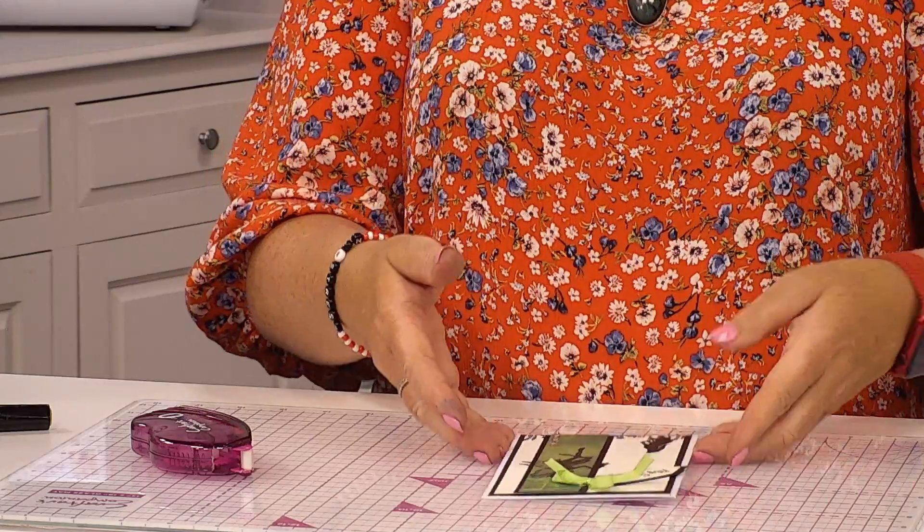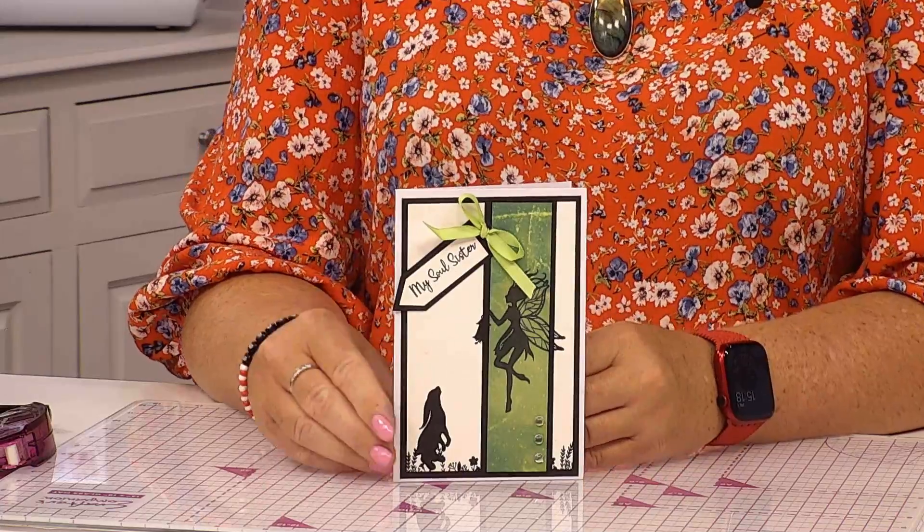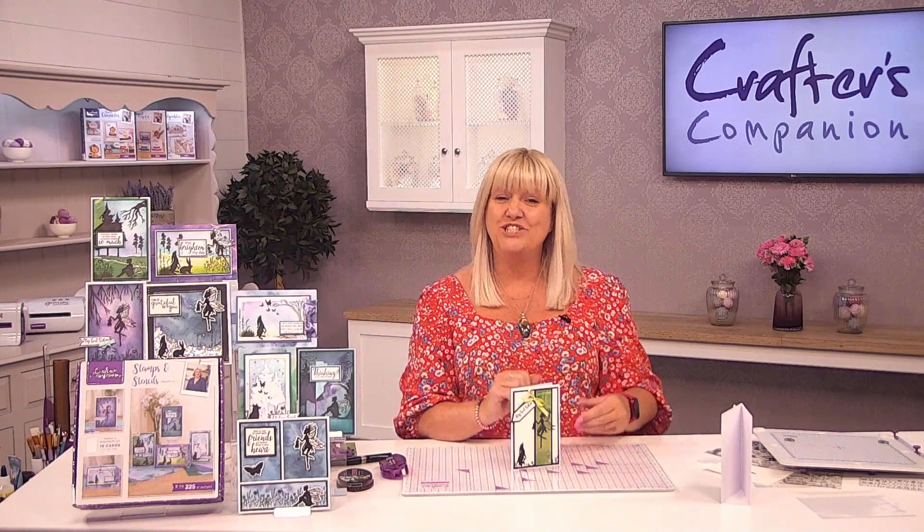And there you go. If I turn that round you'll be able to see that's another one of those very cute cards that you could be making with this collection. And there you go, that's box number 51 which is the stamps and stencil kit.